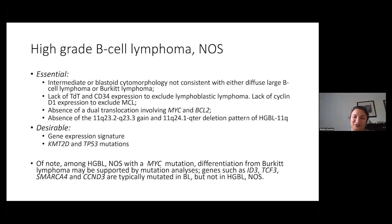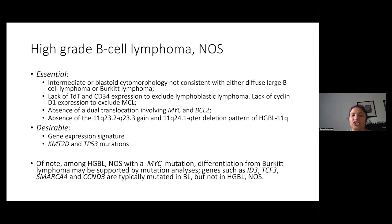Of note among high-grade B cell lymphoma NOS with a MYC mutation, differentiation from Burkitt lymphoma may be supported by mutation analyses. Genes often mutated in Burkitt lymphoma — such as ID3, TCF3, cyclin D3, and SMARCA4 — are not found in high-grade B cell lymphoma. There's also a new entity: Burkitt-like lymphoma with 11q abnormalities, which was previously called Burkitt lymphoma in the fourth edition mainly because of its morphology, but after molecular analyses the mutational spectrum was found to be more similar to DLBCL than to Burkitt. That's why it's considered a different entity now.